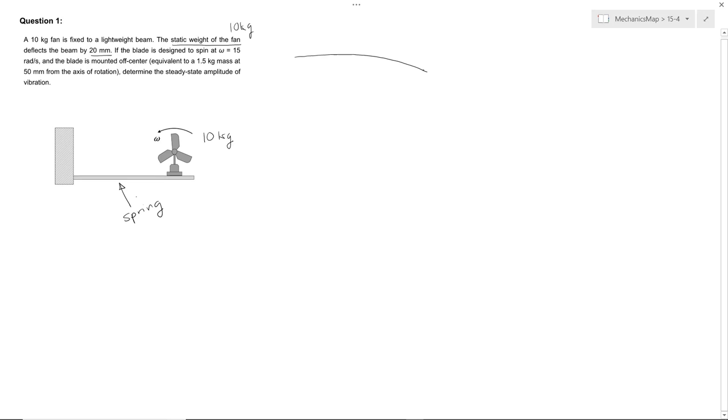So this beam, if we just have the fan sitting on it and not operating, the force of gravity from that fan causes the end to dip by 20 millimeters. We can take the sum of forces in y. That's going to be negative the force of gravity equals essentially the spring force opposing it. So we'll have negative mg equals k times negative 0.02 meters.